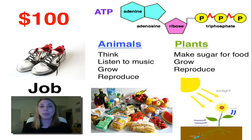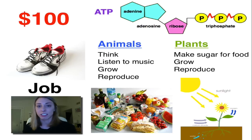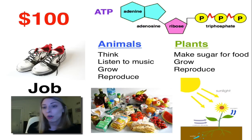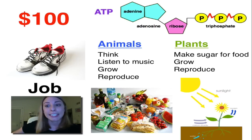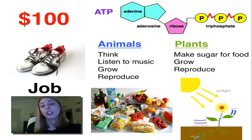So you have ATP — it acts like money. You can spend however many ATP it takes to think, to listen to music, to grow, or to reproduce if you're an animal. And plants need to fork over however much ATP to make sugar that they'll use to make even more ATP.